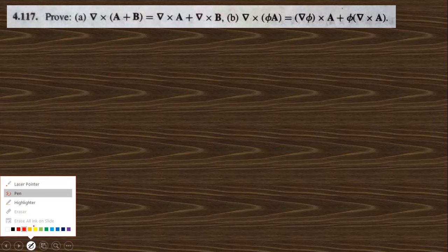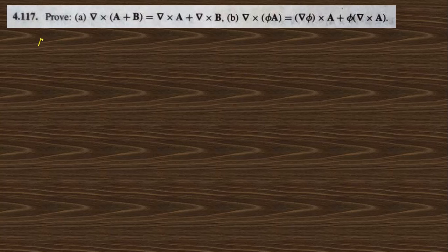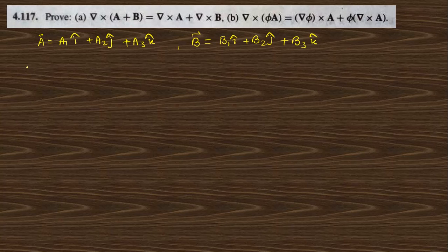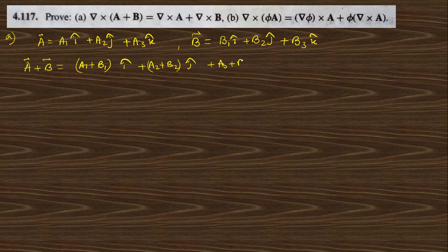Going directly to question 4.117, we need to prove this identity. We take vector a = a1 î + a2 ĵ + a3 k̂, and vector b = b1 î + b2 ĵ + b3 k̂. So a + b = (a1 + b1) î + (a2 + b2) ĵ + (a3 + b3) k̂.